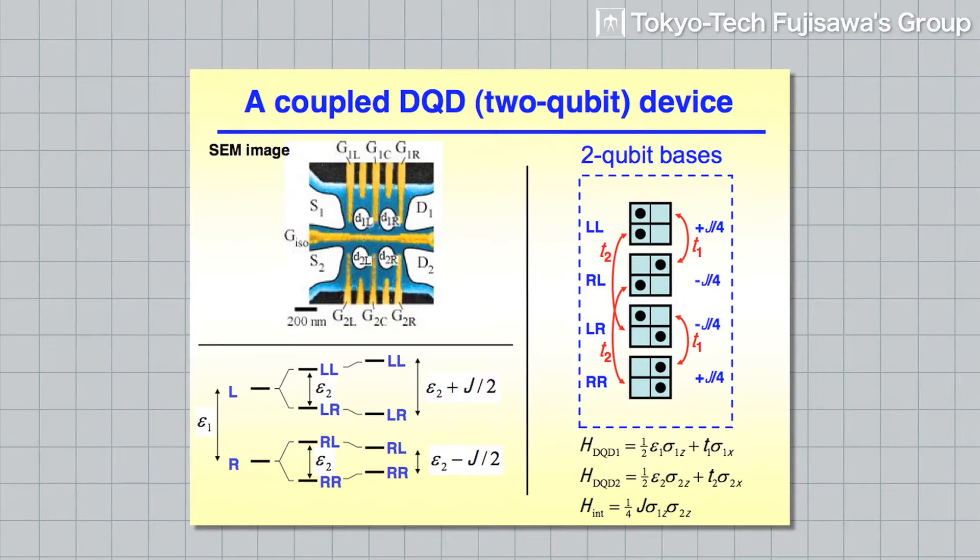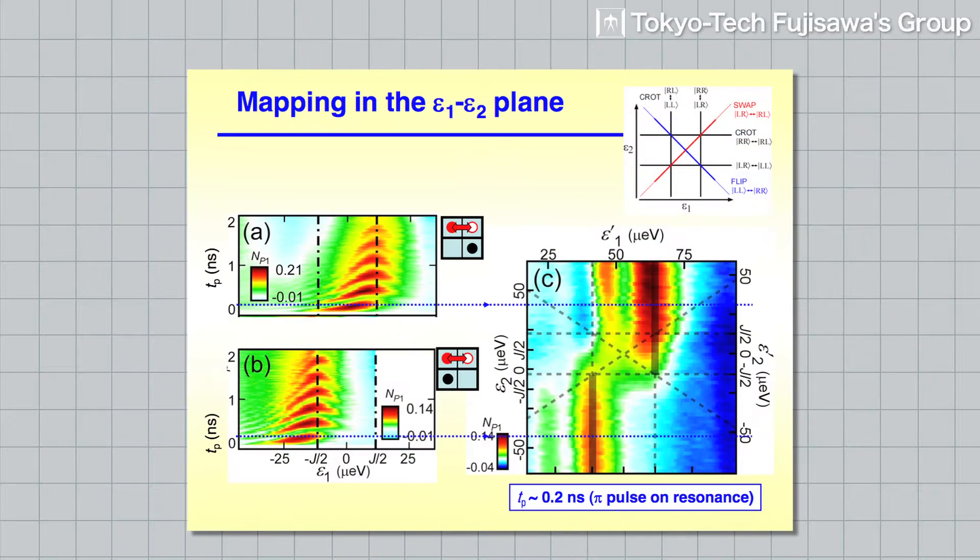By studying quantum dynamics of one or two quantum bits, one can design a device for selectively performing various quantum operations.